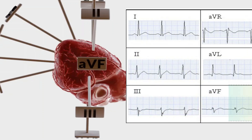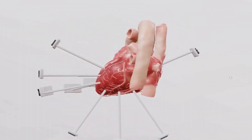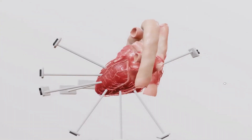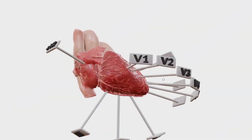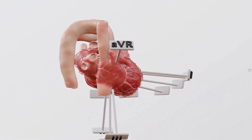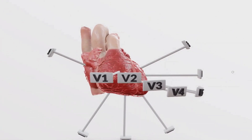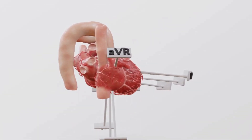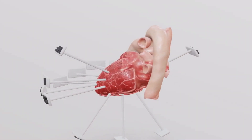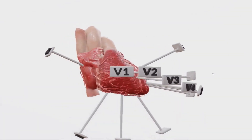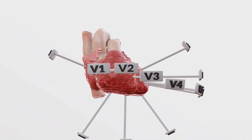Moving on to the posterior wall — the back of the heart. The posterior wall is not directly viewed by the standard ECG leads. Instead, we have to look for reciprocal changes in other leads, especially V1 and V2. V1 and V2 look at the anteroseptal area, which is opposite the posterior wall. So if something's happening in the posterior wall, it can cause changes in V1 and V2 that are like a mirror image of what you'd expect to see in an anterior problem. We call these reciprocal changes. So V1 and V2: reciprocal posterior view. To assess the posterior wall, you have to be a bit of a detective and look for those reciprocal changes in V1 and V2, and consider them along with everything else you see on the ECG.